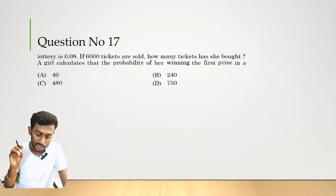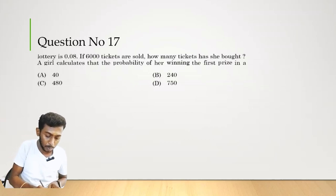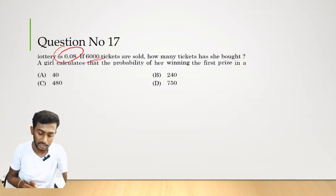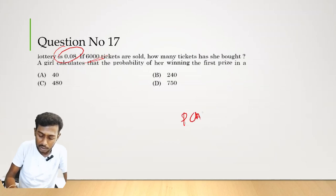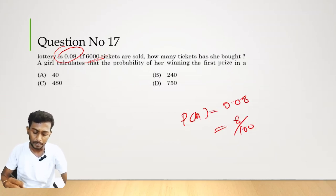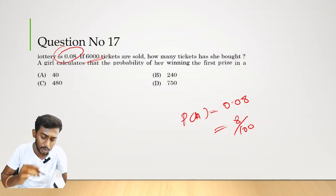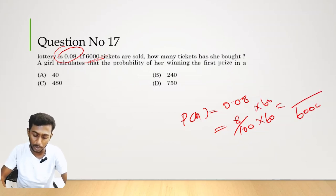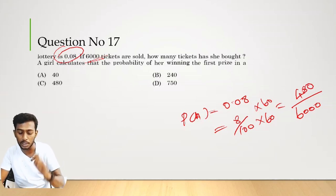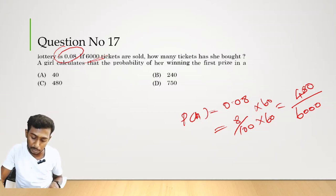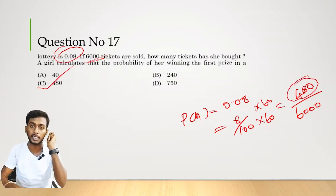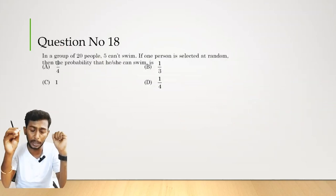Question number 17. A girl calculates the probability of winning the first prize in a lottery as 0.08, if 6000 tickets are sold. P = 8/100. Total tickets = 6000. Number of tickets she bought = (8/100) × 6000 = 480. Therefore option C is the correct answer — she bought 480 tickets.